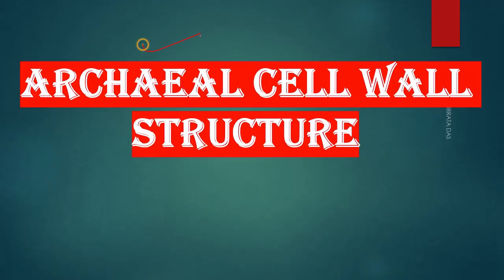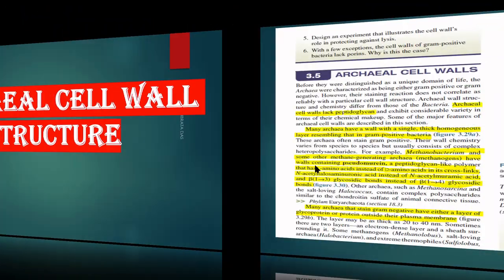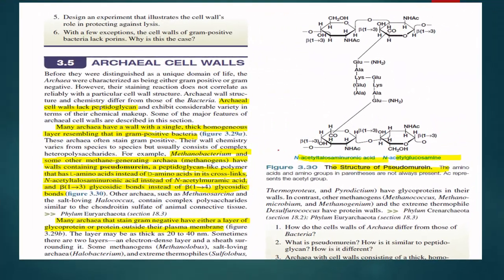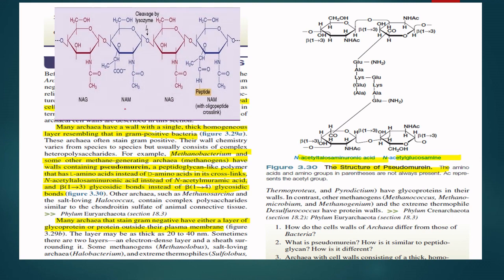Let's see the archaeal cell wall structure. What is the difference between bacterial cell wall structure and archaeal cell wall structure? We have seen that bacterial cell wall structure is made up of peptidoglycan layer, but the archaeal cell wall structure is made up of pseudomurein.